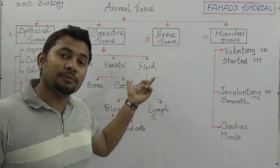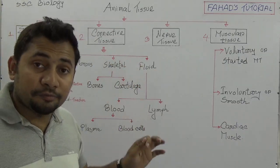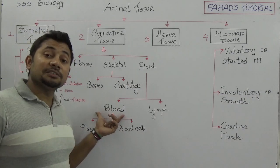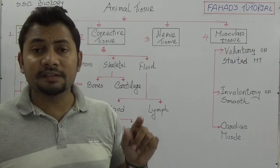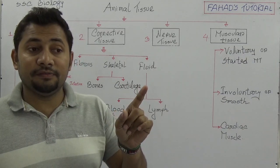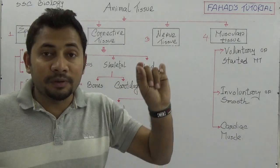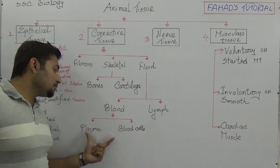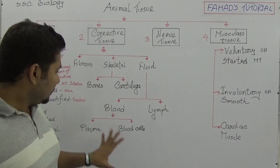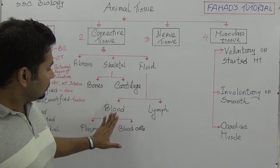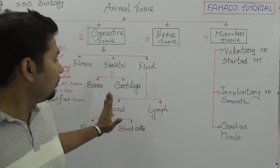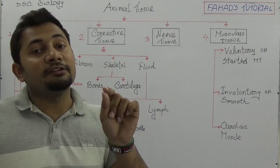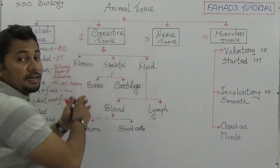In case of fluid connective tissue, we have two types: blood and lymph. Blood requires many hours to explain fully — it will be discussed in Chapter 6 on transportation in animals and plants. Blood is divided into two different compositions: plasma and blood cells. Fibrous connective tissue has fiber inside its matrix. So connective tissue is divided into three categories: fibrous, skeletal, and fluid.